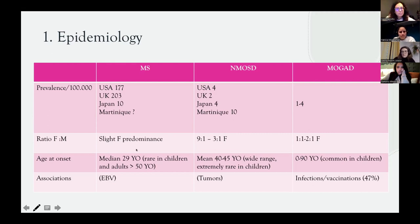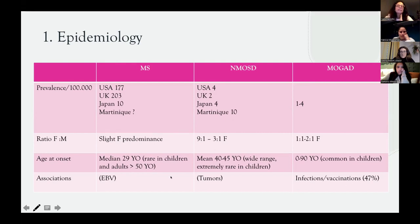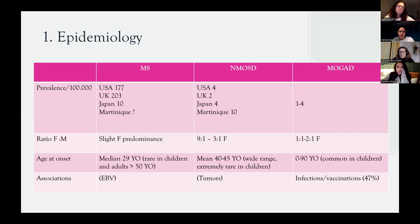The age at onset is different. For MS, the median is 29 years old and it is very rare in children, so when we see a child with MS we tend to question the diagnosis. NMOSD usually has onset around 35–45 years old with a wide range, and is extremely rare in children. MOGAD, on the other hand, has a wide range but is very common in children — so whenever we see a child with an inflammatory demyelinating condition, we first think about MOGAD.